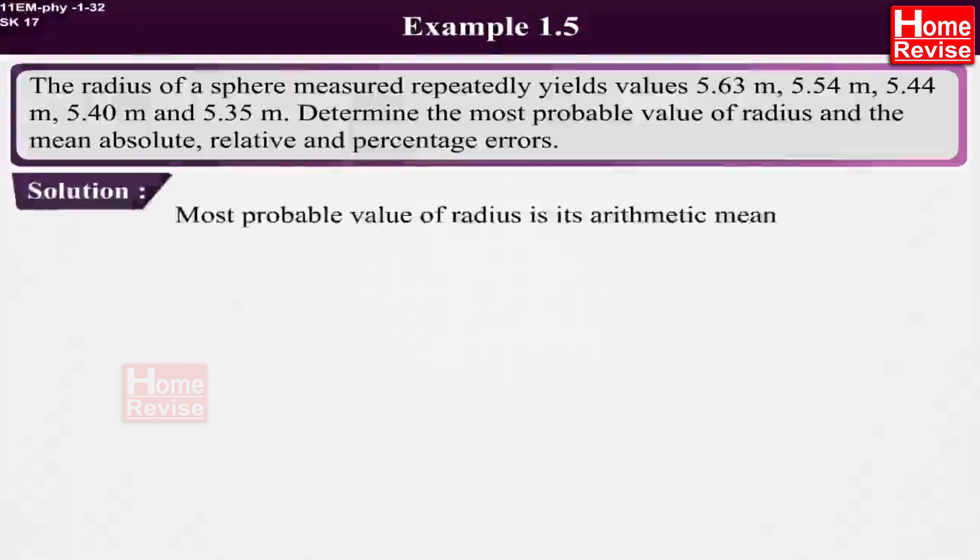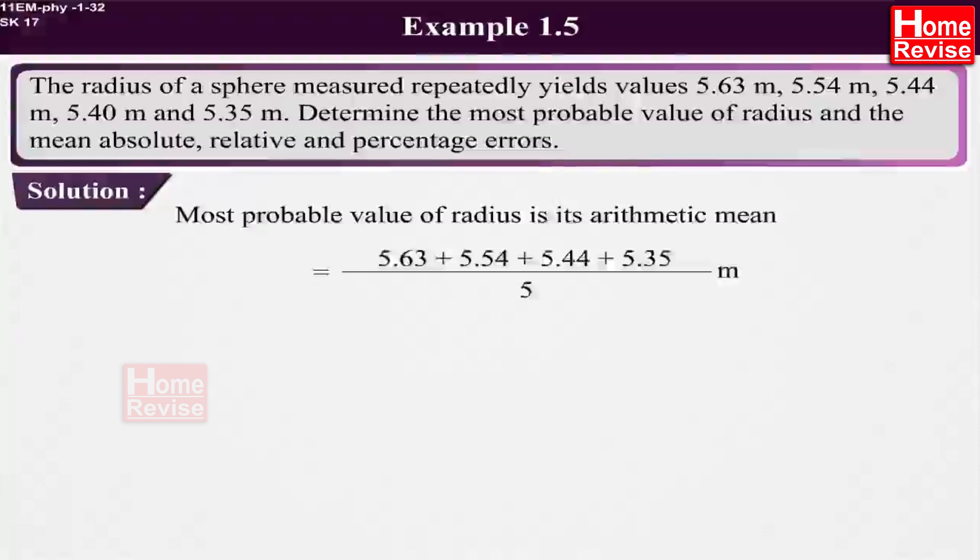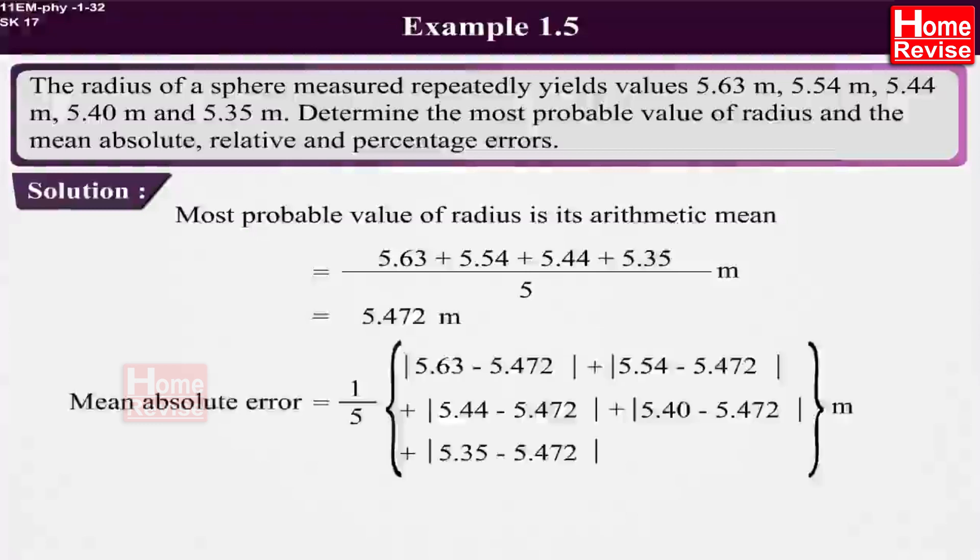Solution: Most probable value of radius is its arithmetic mean which is equal to 5.63 plus 5.54 plus 5.44 plus 5.40 plus 5.35 the whole upon 5 meters which is equal to 5.472 meters. Mean absolute error is equal to